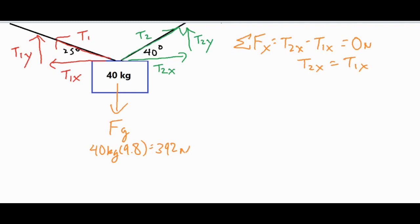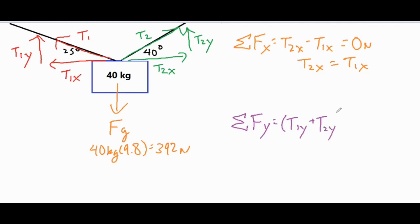For the y direction, we sum all forces: we have two upward forces, T2y and T1y, and one downward force, Fg. So the sum of our two upward forces minus our one downward force equals zero newtons, again because our object is at rest and the net force along each axis is zero.